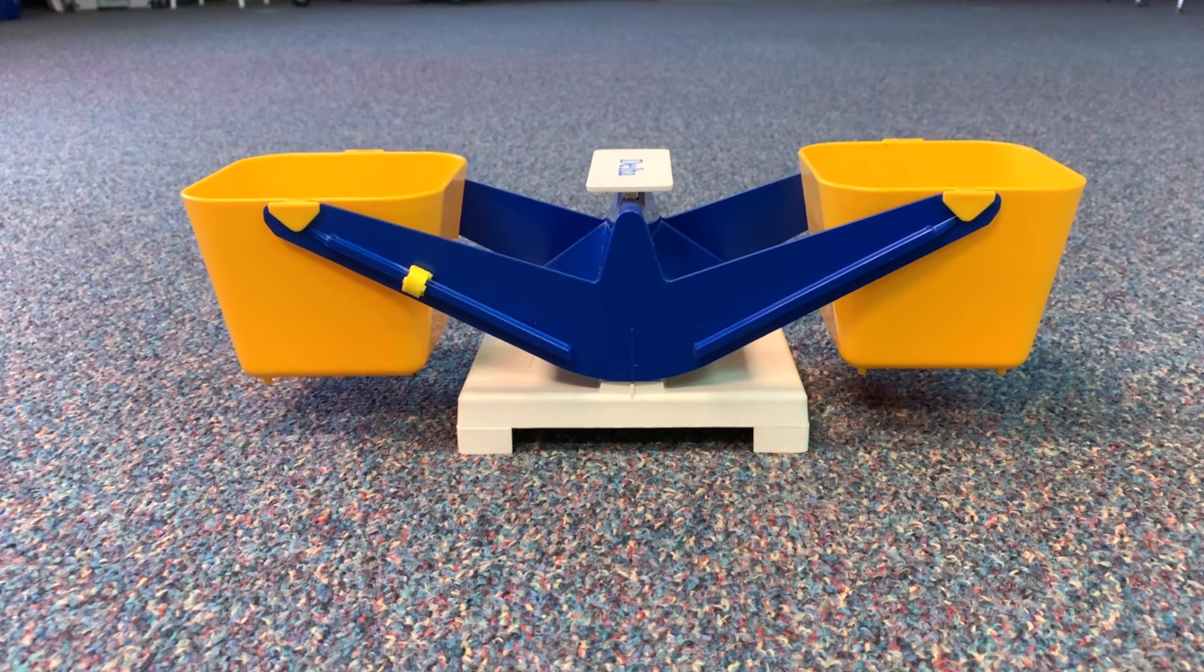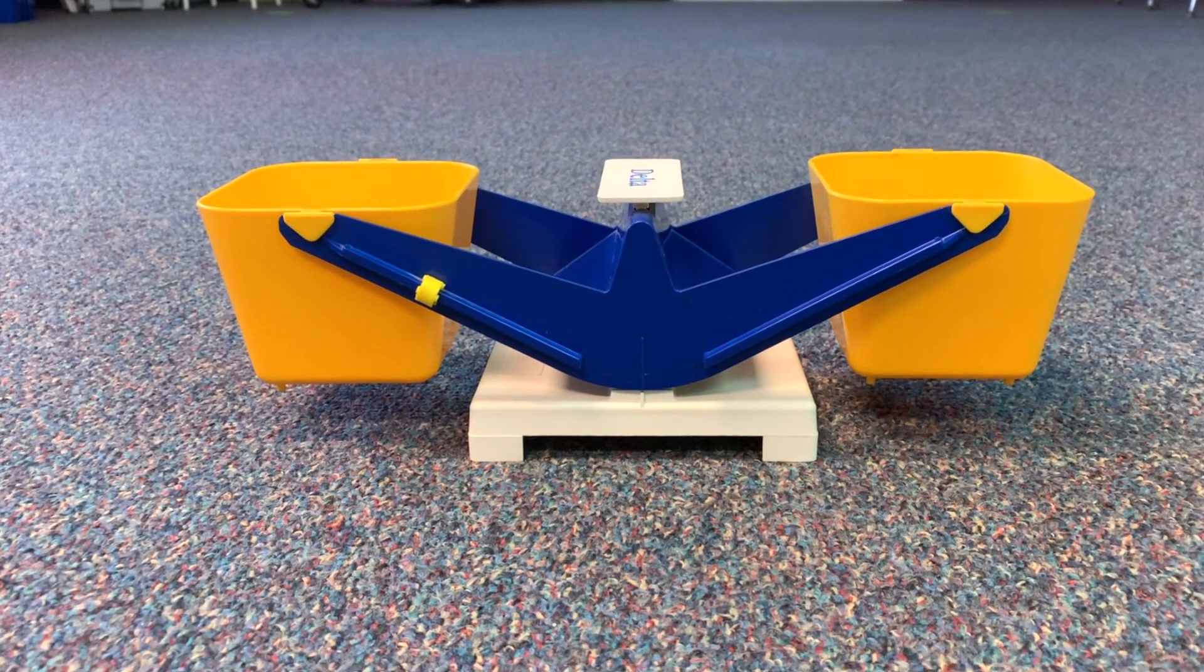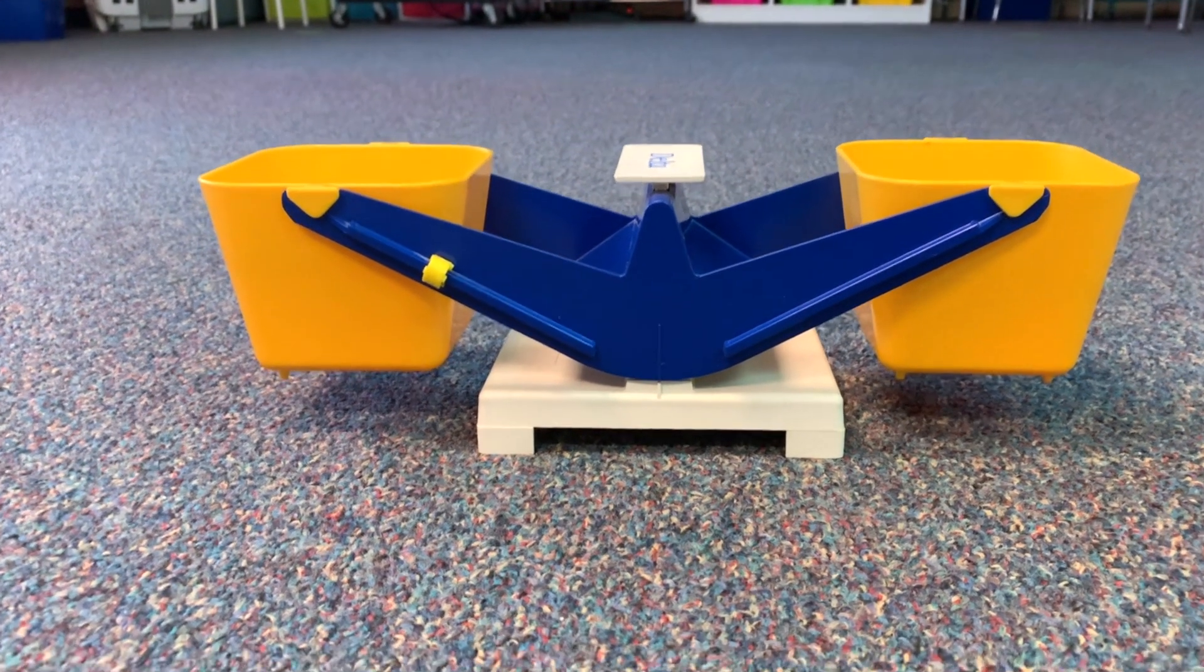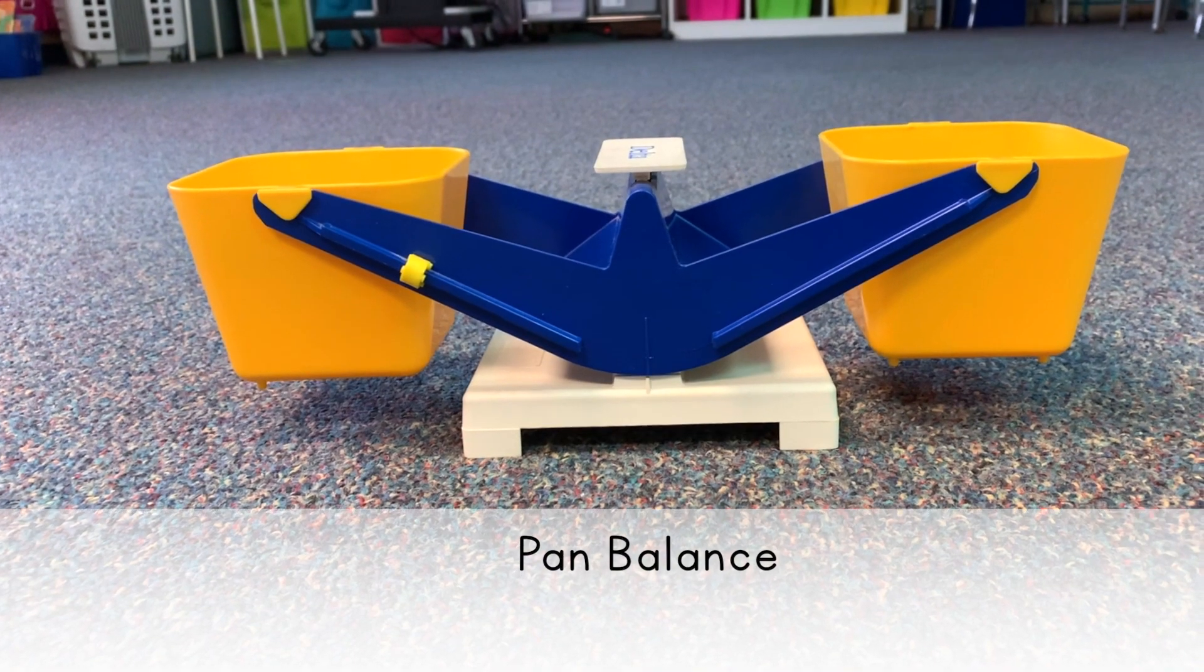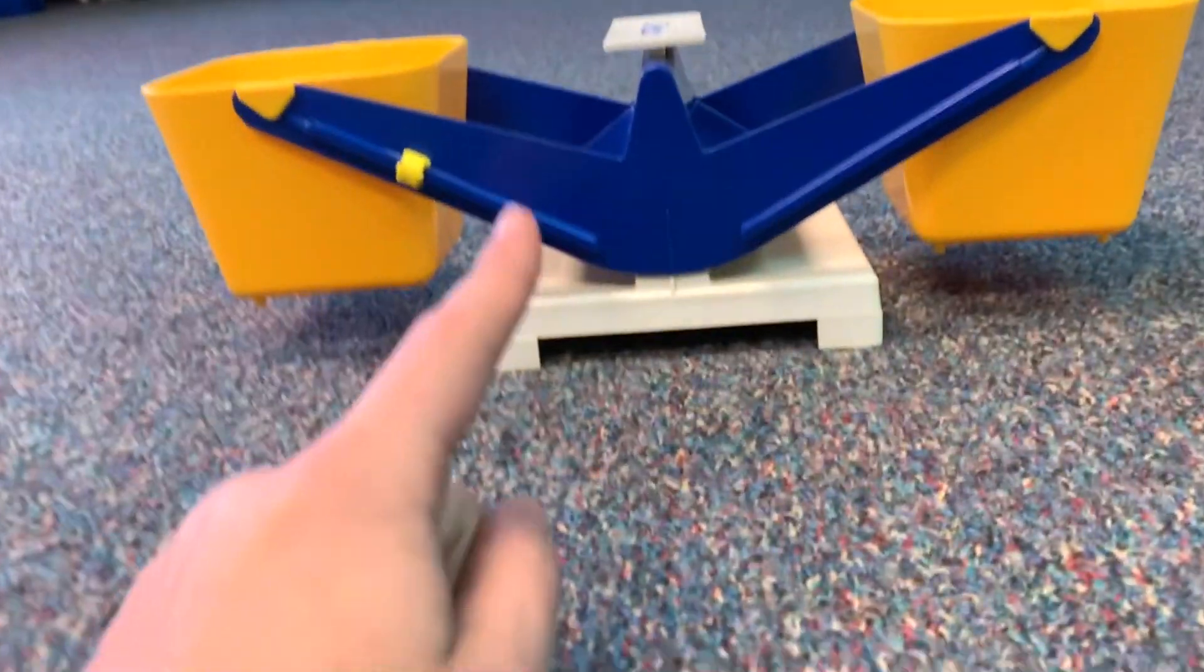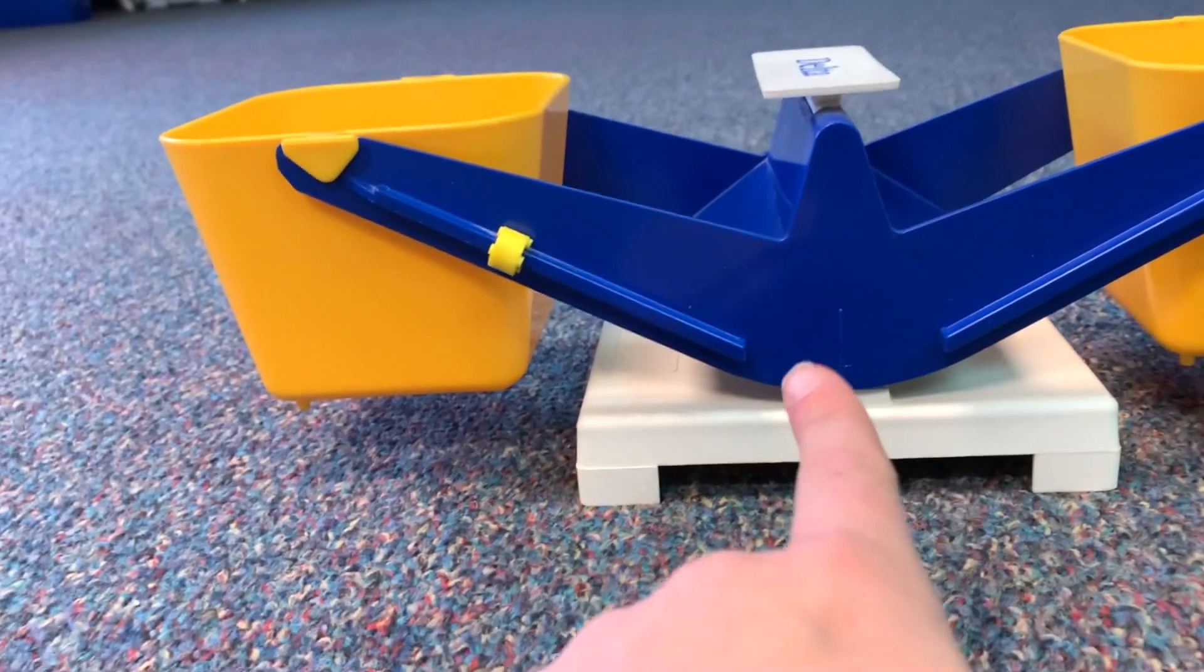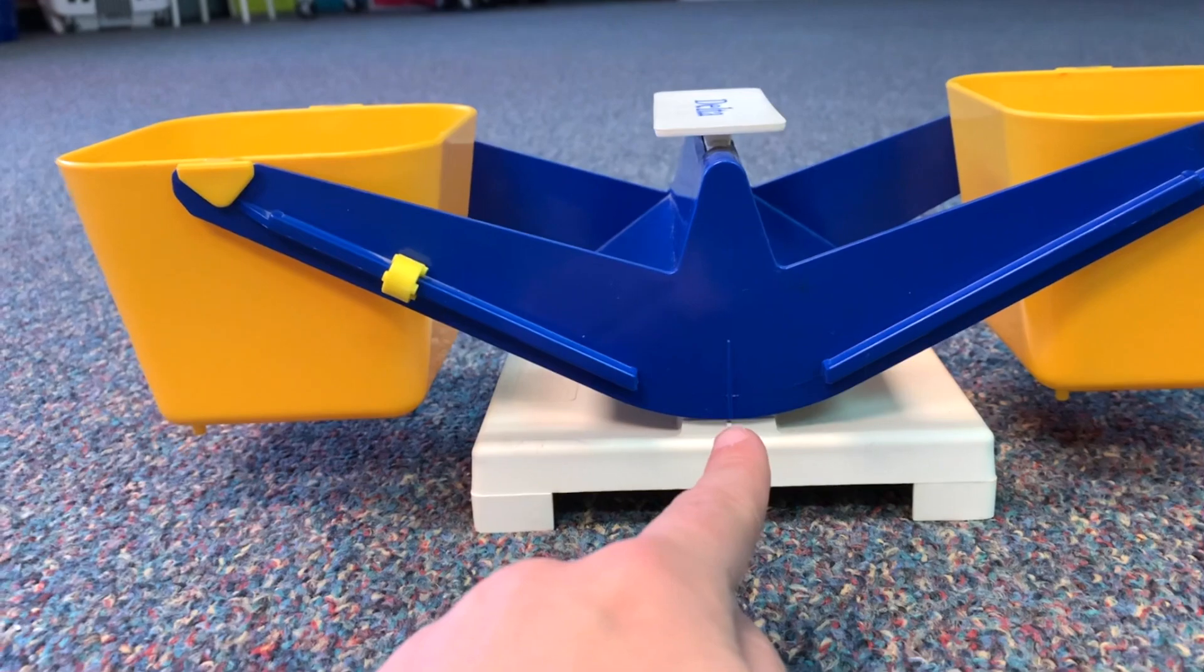Does this remind you of the teeter-totter picture with the elephant and the ant? It is called a pan balance, and a pan balance is a tool that measures the weight on either side and compares it. So on this left side and on this right side. And there's a line in the middle here that tells us if the weight on both sides is equal.